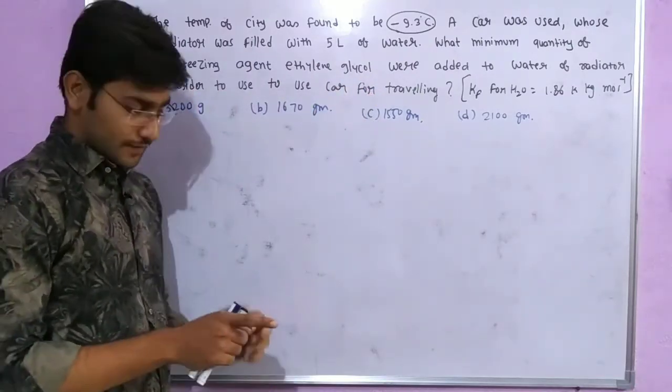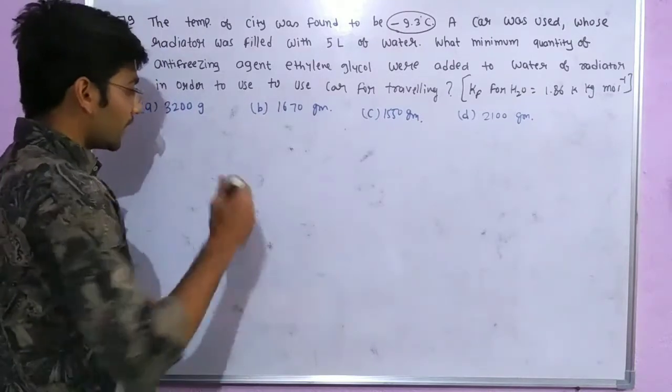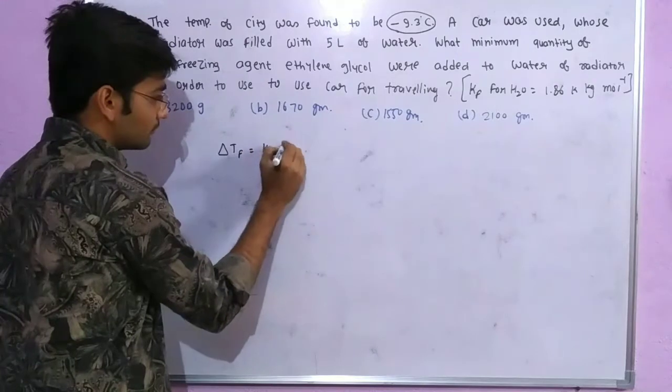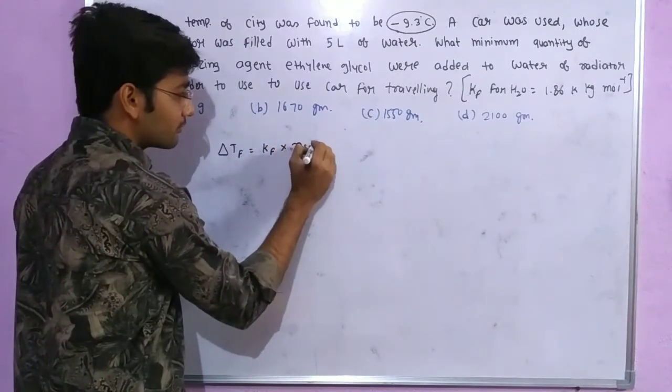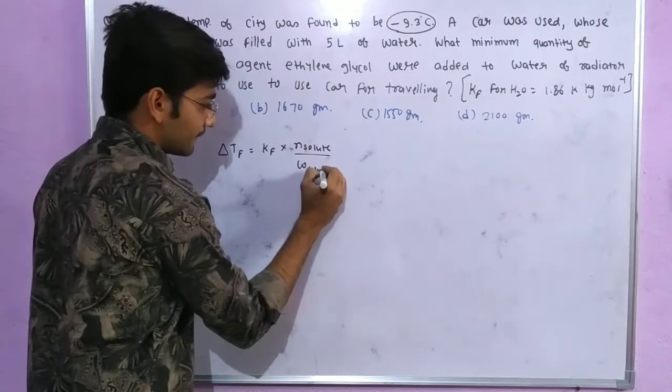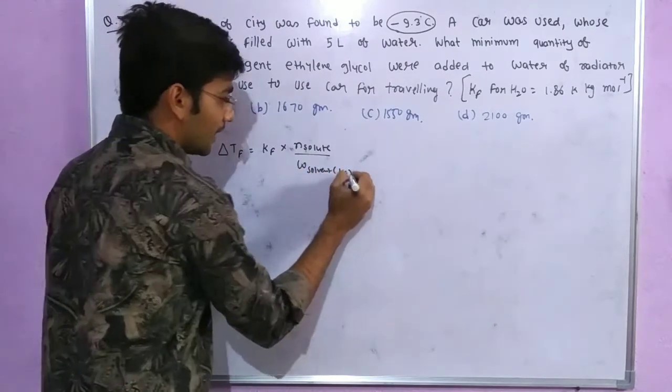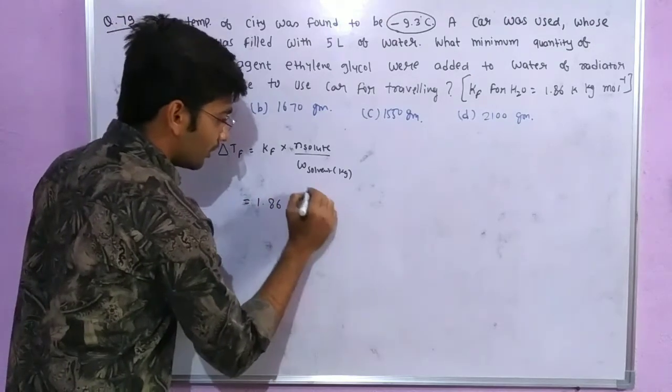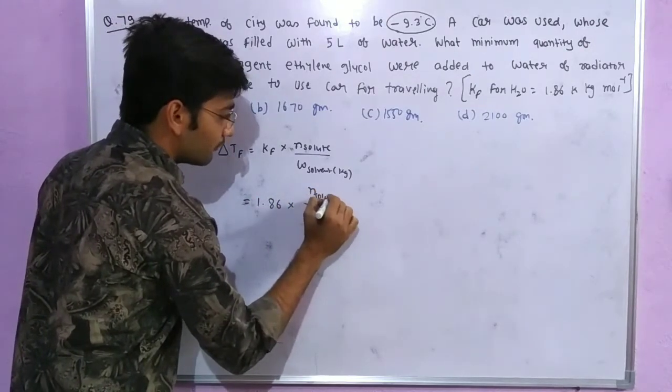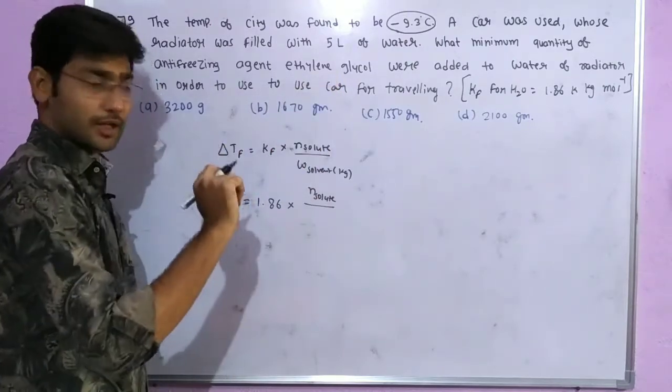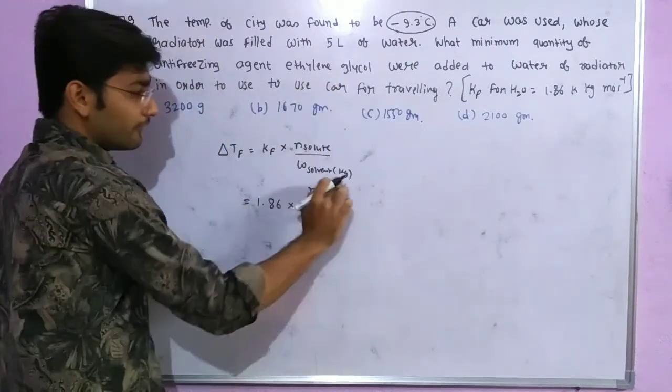The formula is Delta TF equals Kf into molality, and molality is moles of solute upon weight of solvent in kilogram. So you need to calculate moles and weight of solute.